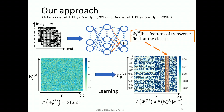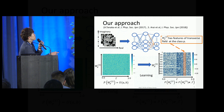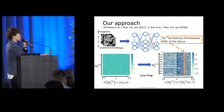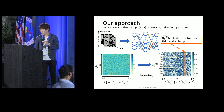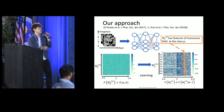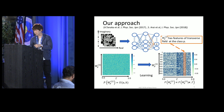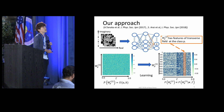W_P is the weight parameter connected to unit P in the output layer, and W_P has a feature of the strength of the transverse field at class P. This is a visualization of the output from the output layer to the hidden layer. Before learning, the distribution of W_P is uniform. But after learning, the distribution of P is conditioned by the spin configuration sigma and the strength of the transverse field. And you can see around this region there are boundaries. This boundary corresponds to the critical point in this previous study.